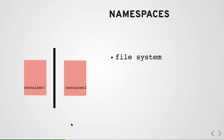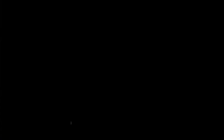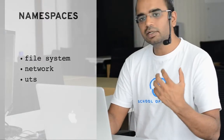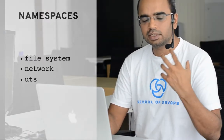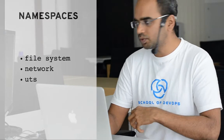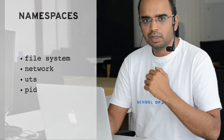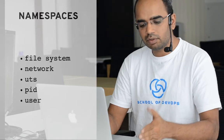The namespaces include: a file system namespace, so each container can have its own operating system or file systems; a network namespace, so each container can have its own IP address and interface; a UTS namespace for the hostname, so each container can have its own hostname; and the PID namespace that was just described.